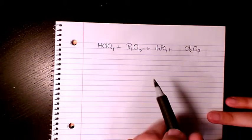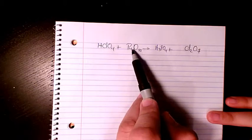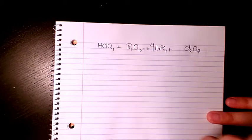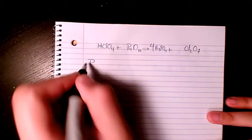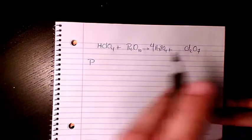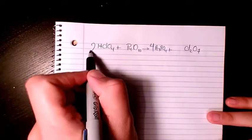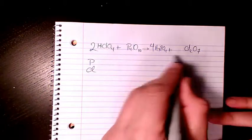I start with phosphorus. Phosphorus, we have four of them in the reactant side and the product side we have one, so it's better to put four here. So now P is balanced. What about chlorine? Chlorine we have two, one here and two here, so I put two in this side. So chlorine is balanced because two and two.